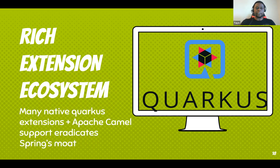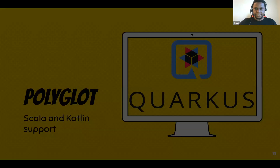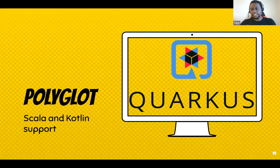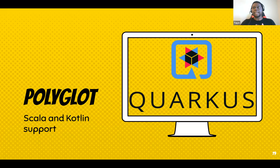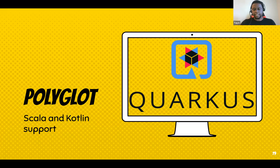That's one reason why Quarkus is a real threat to Spring right now — whatever Spring offers in terms of ecosystem moat, Quarkus blows it out of the water. It's also polyglot: because of GraalVM you can program in Quarkus with Scala and Kotlin, with more languages to come, and still benefit from native imagery and all the good stuff.